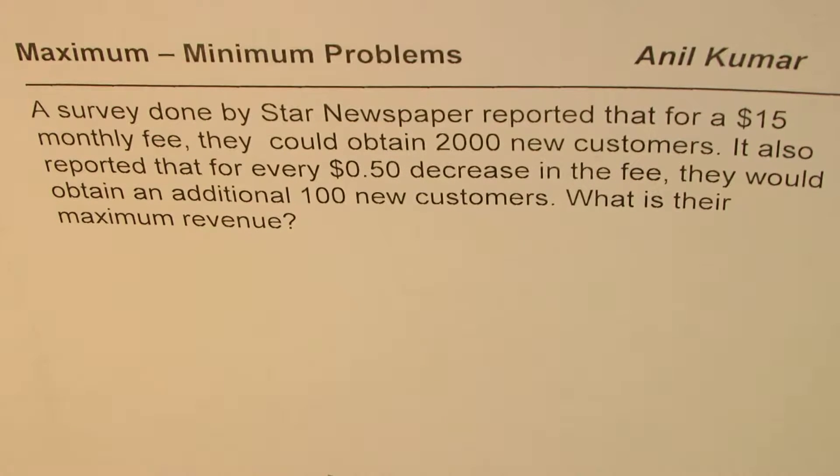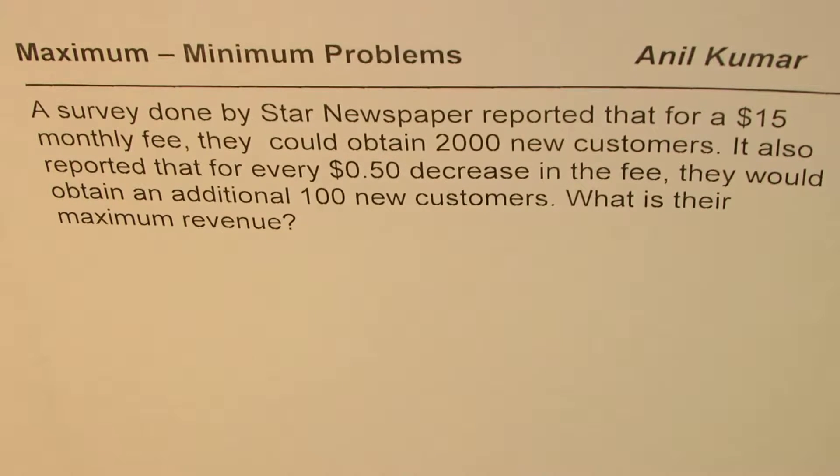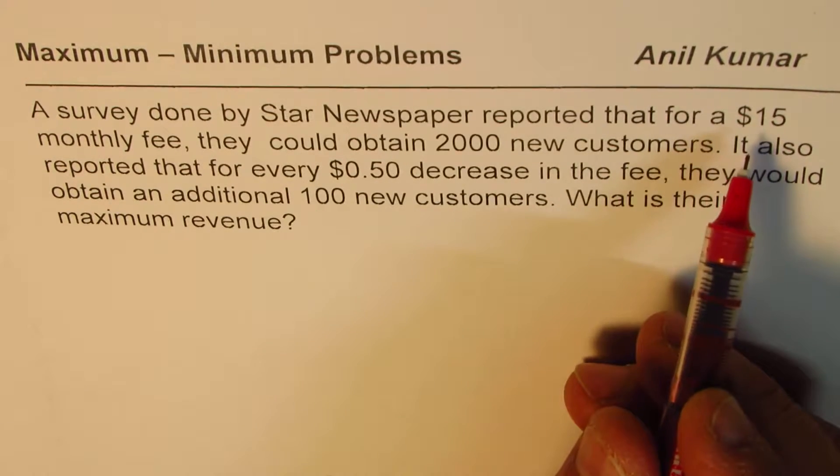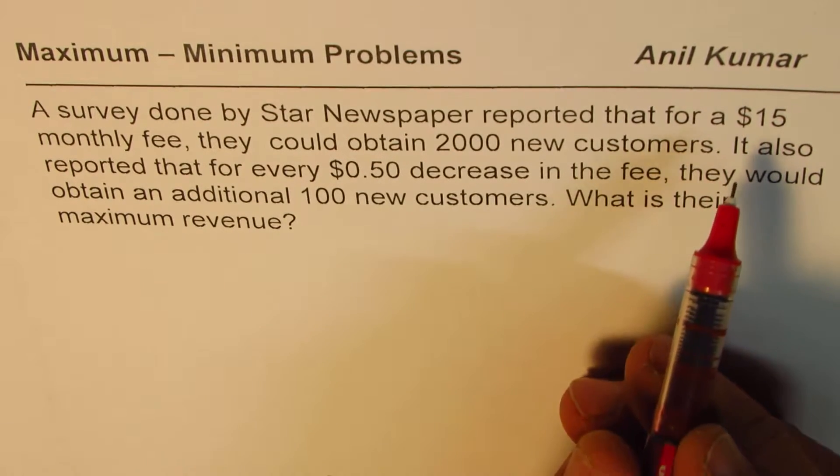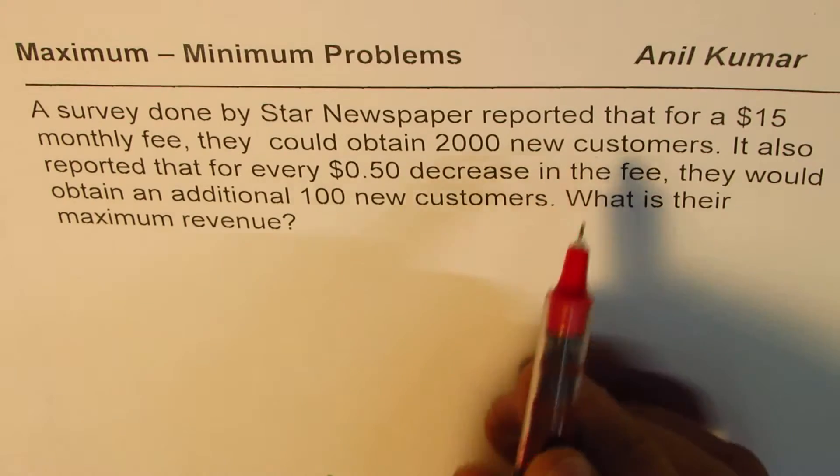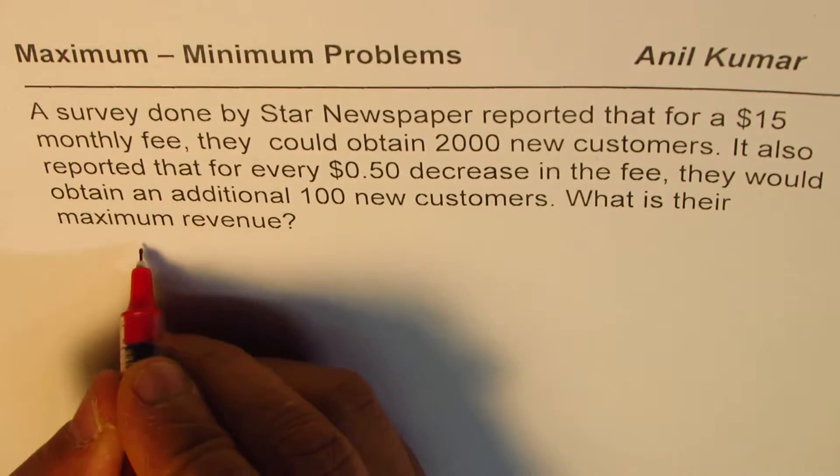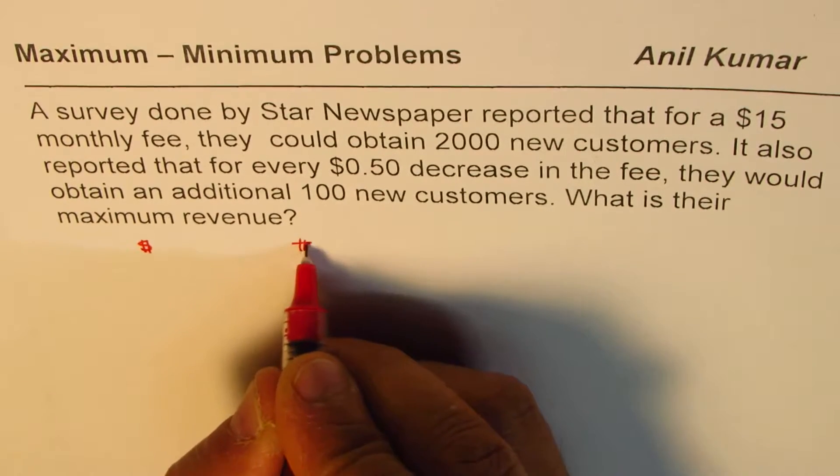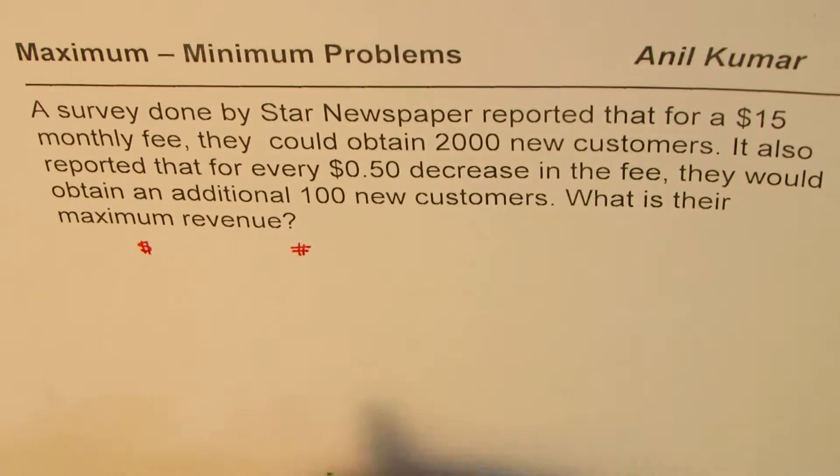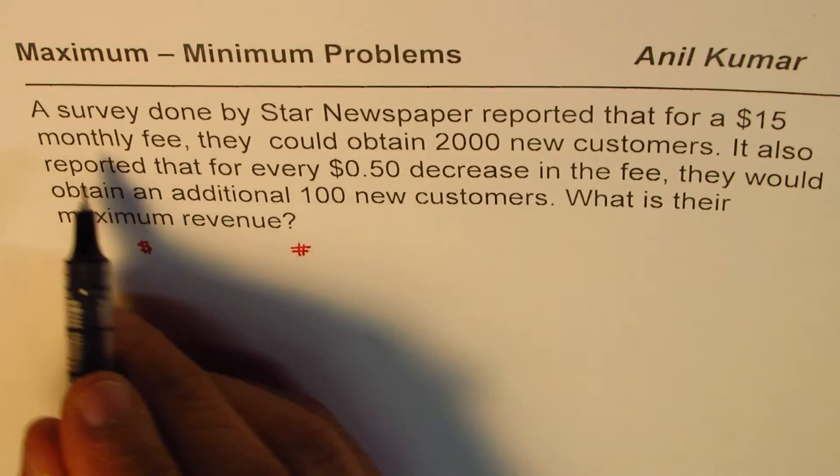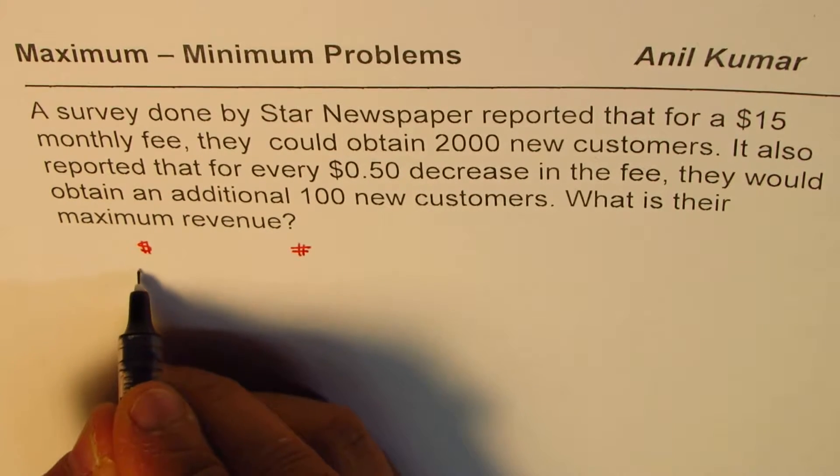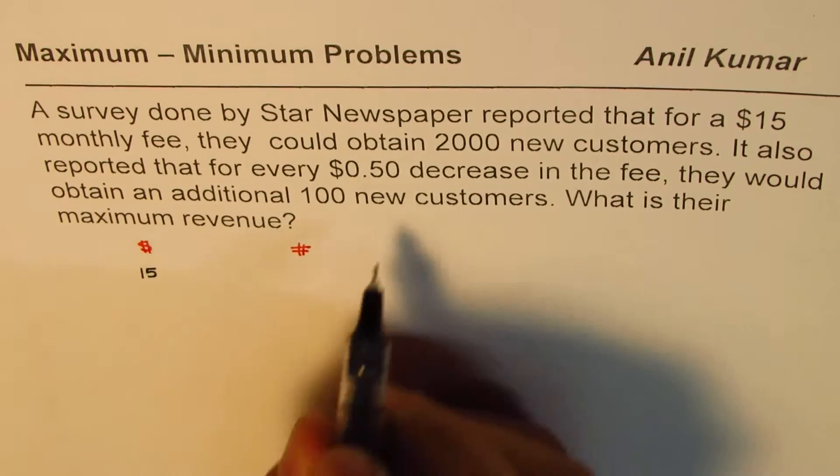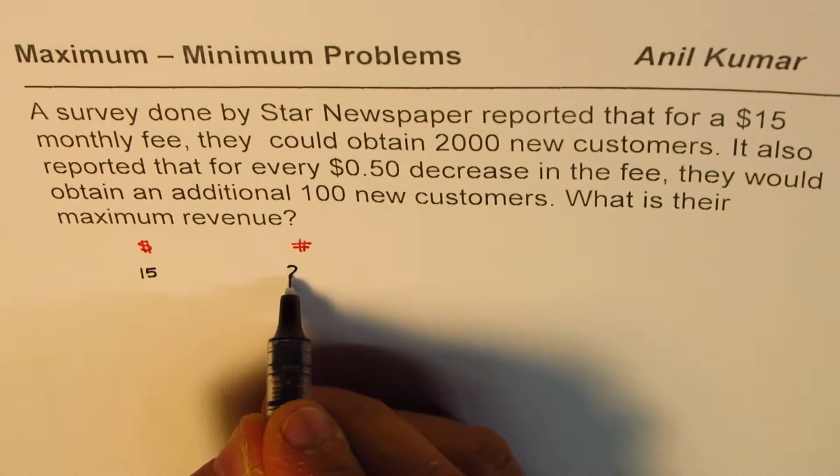That's the question for you. Let's try to understand it. So we have a dollar amount against which we can have some customers. So we say the dollar amount and we say number of customers. That is what we are going to relate. So if the dollar amount, which is the monthly fee in this case, is 15, then the customers are 2,000.